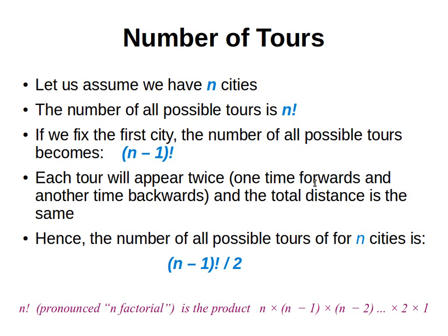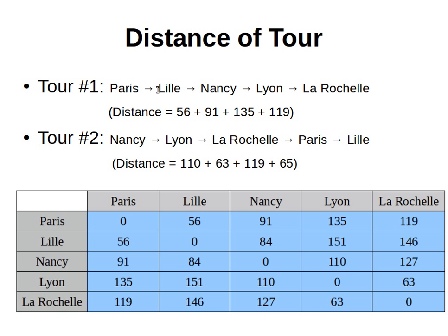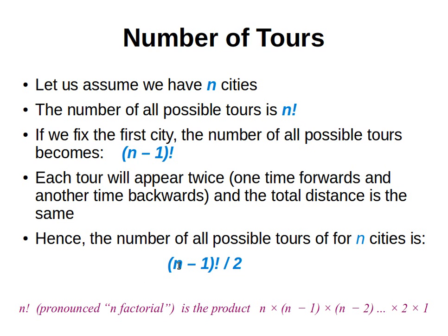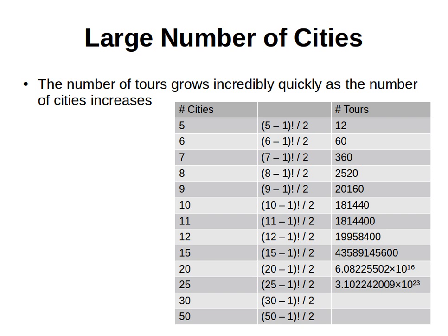We cut it by half — divide by two — because the same route in the opposite direction yields the exact same distance. That means the number of possible tours for n cities is (n−1)! divided by 2. The (n−1) comes from fixing the first city, and the division by 2 accounts for the fact that each route and its reverse are equivalent.